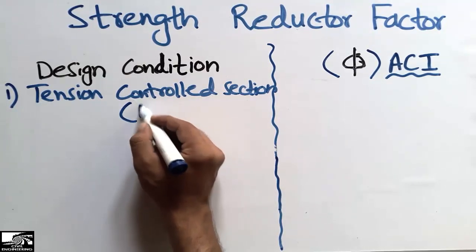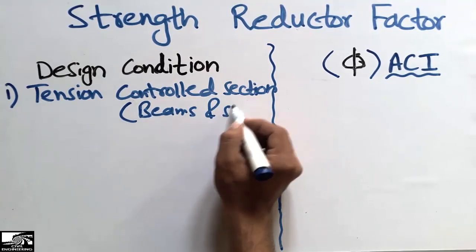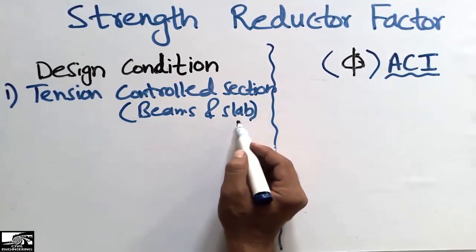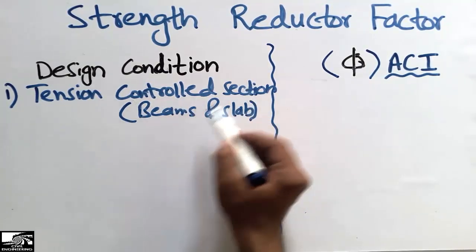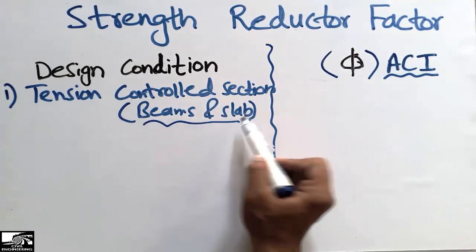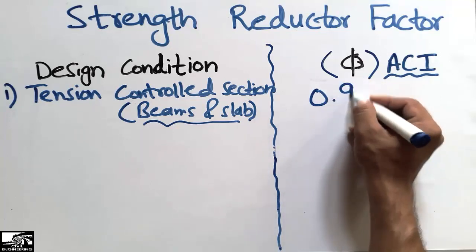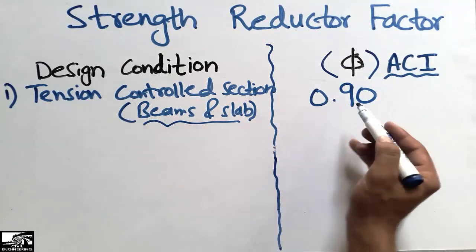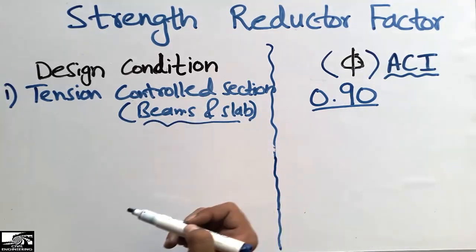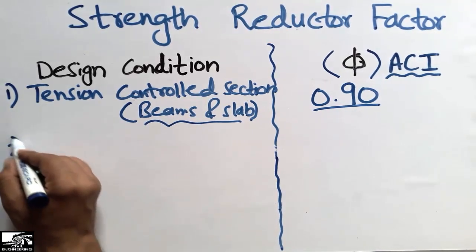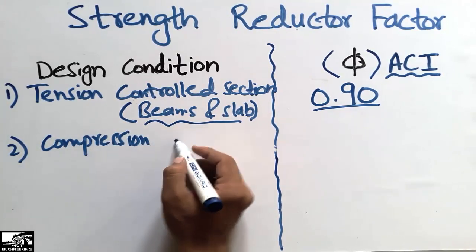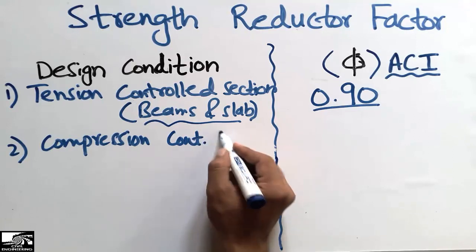Tension control sections mainly include beams and slabs, because they exhibit tensile behavior. When designing these tension control sections — beams and slabs — we should use a strength reduction factor of 0.90. We must multiply this factor to reduce the actual strength of the beam or slab.